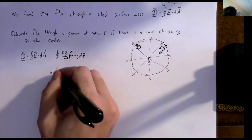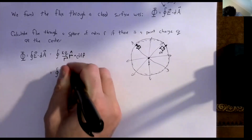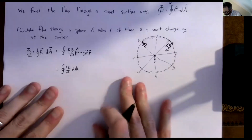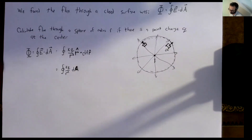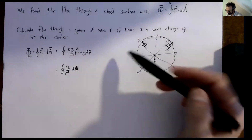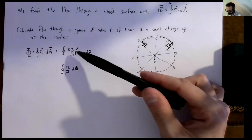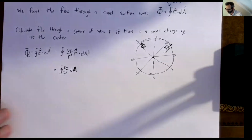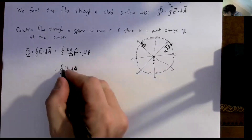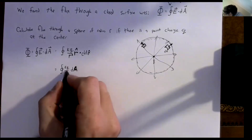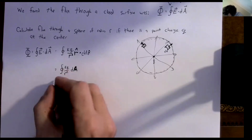That makes this much simpler because now we don't have any vectors — we just have kq over r squared times dA. So now I want to take this surface integral. Before I do that, what can I pull out of the integral because it's a constant?